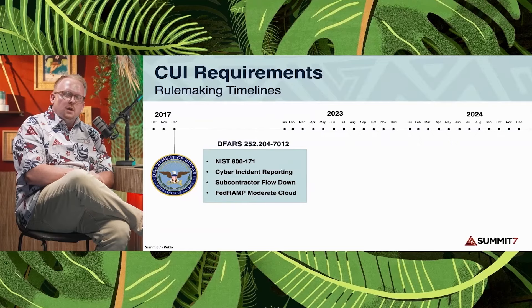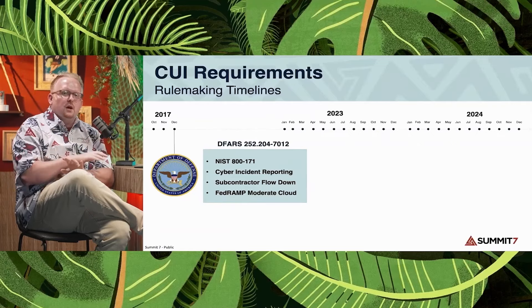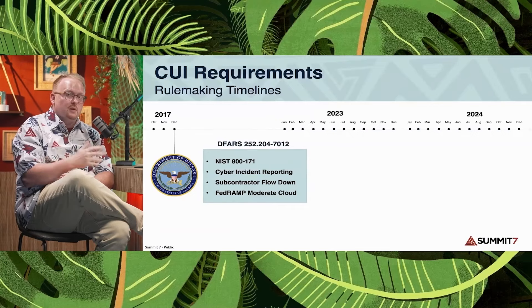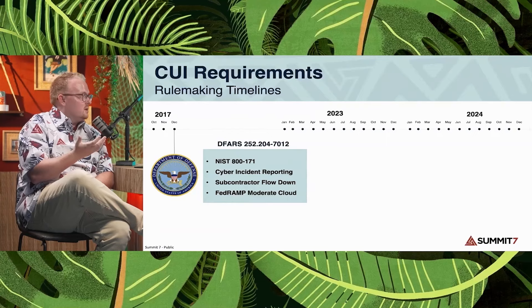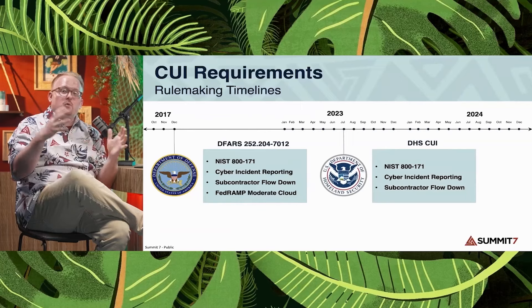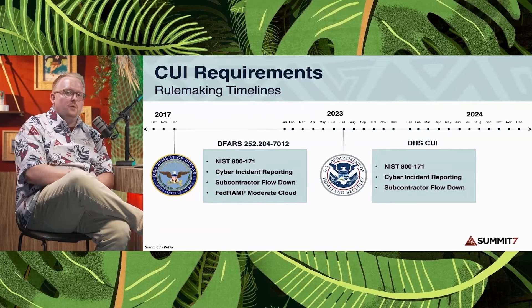CUI requirements — lots of logos on the screen. Some are enforcing CUI safeguarding requirements, some are not yet. DFARS 7012 has four major components: NIST 800-171 with 110 controls and 320 assessment objectives; cyber incident reporting — being able to report within 72 hours of discovery of an incident; subcontractor flow down — making sure your subs are also protecting CUI to the same requirements; and the FedRAMP requirement — a data center requirement of at least a moderate baseline or what they call moderate equivalency.